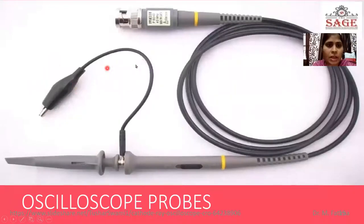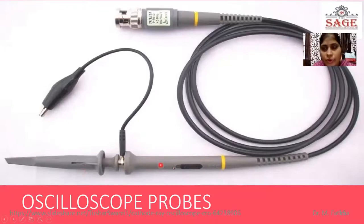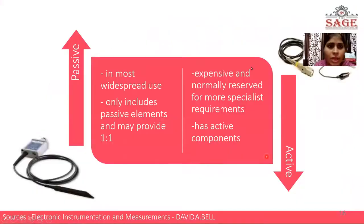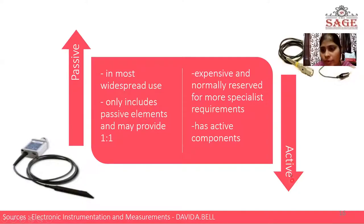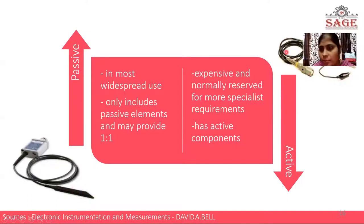Now the probes. This is the probe — it is a cable used to connect to the CRO to transmit a signal. It is used as the feeding line, feeding the signal to the CRO. There are two types of probes: passive probes and active probes. In passive probes, passive elements such as resistance, inductor, and capacitors are connected. In active probes, active components like diodes and transistors are included. With the help of these probes, the signal is given to the CRO from a function generator or from some circuit.